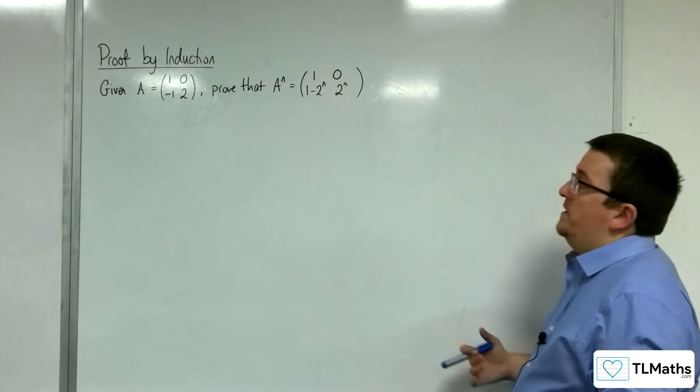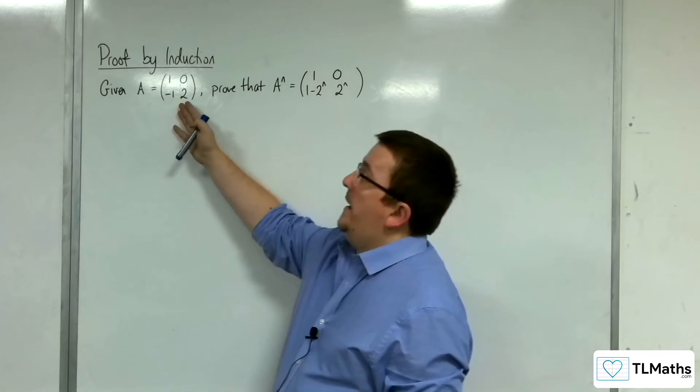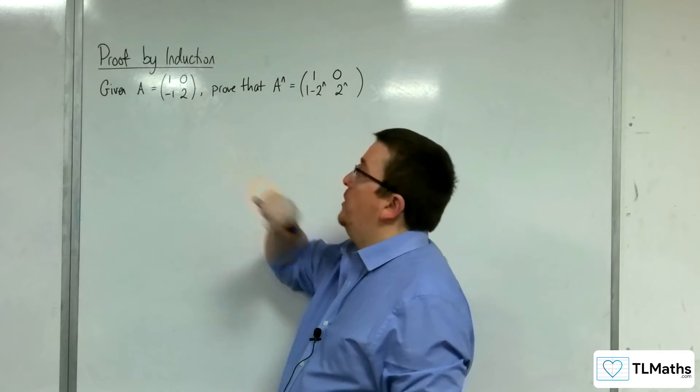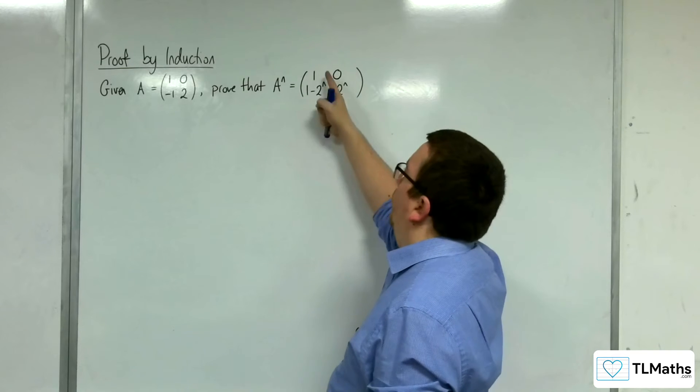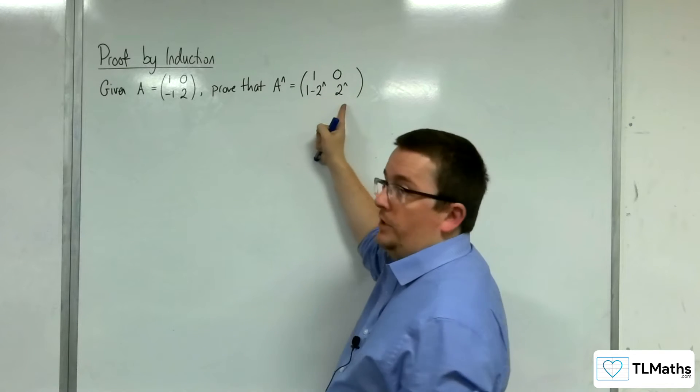In this video we're going to prove by induction that if A is the matrix (1, 0; -1, 2), then A to the n is (1, 0; 1 - 2^n, 2^n).